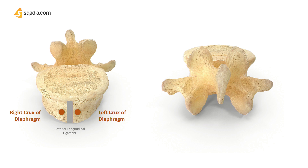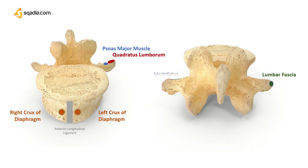Starting from the tips of the transverse processes, which give attachment to the middle layer of lumbar fascia. The transverse process gives attachment to the psoas major muscle, and moving laterally is the attachment of quadratus lumborum. As you move posteriorly, we can observe the attachment of multifidus, overlaid by the erector spinae muscles.